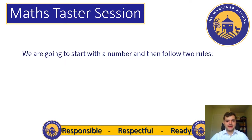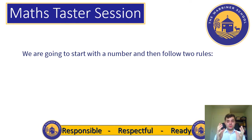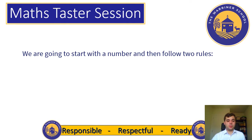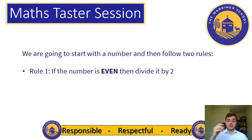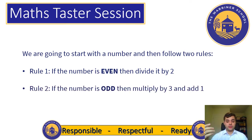So let's get started. There are just two rules really to remember. We're going to start with a number and then decide: is the number even or odd? Is the number divisible by 2 or not? If it's divisible by 2, you divide that number by 2, or halve it. And the second rule is if the number is odd, you multiply it by 3 and add 1. So those are the two rules. We're going to do a couple of examples first.